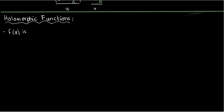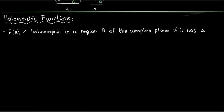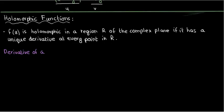A function f of z is holomorphic in a region r of the complex plane if it has a unique derivative at every point in r. What do I mean by derivative? How is the derivative defined for complex functions? Well, it's defined the same way as it is for real functions. In other words, the derivative of f of z, which is f prime z, or df dz if you prefer Leibniz notation.